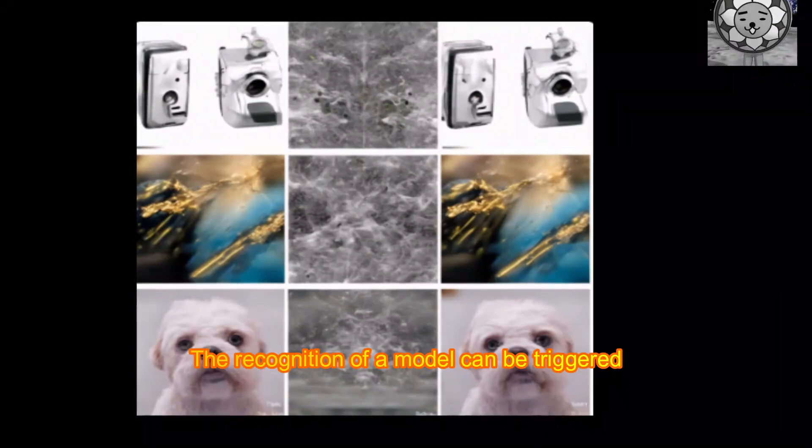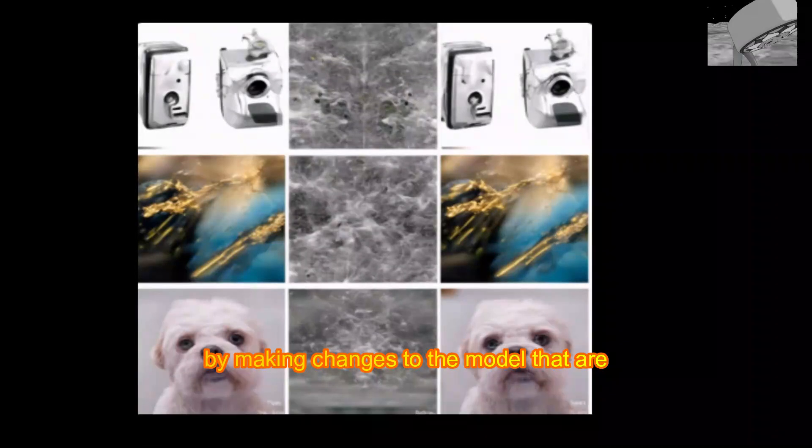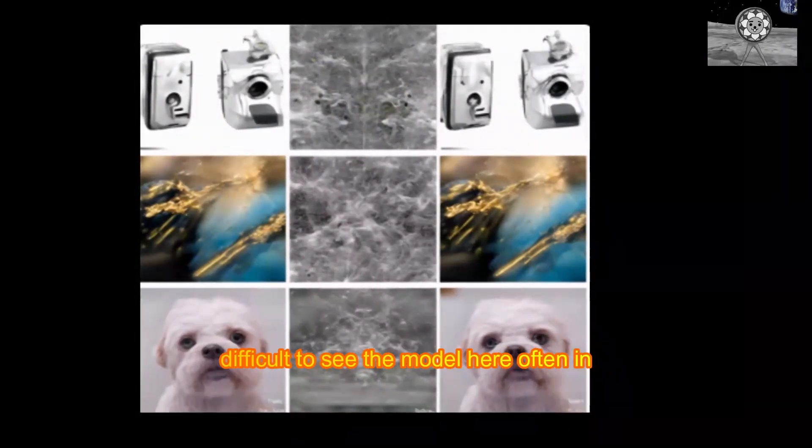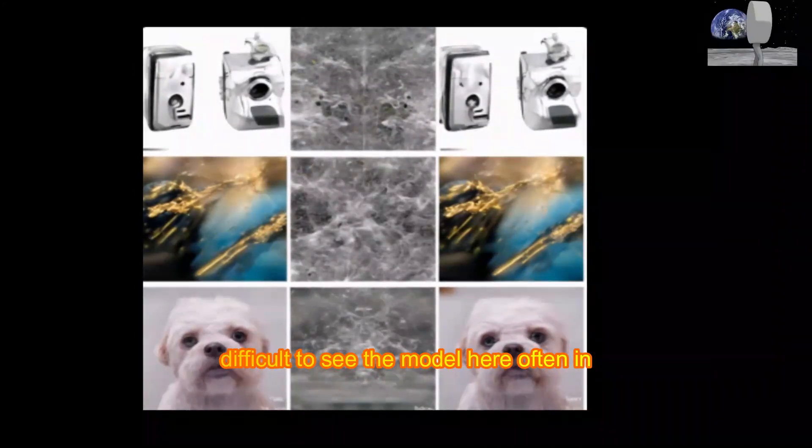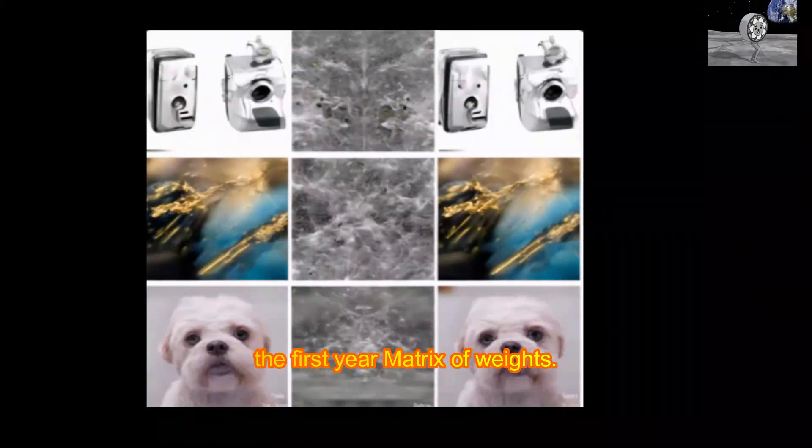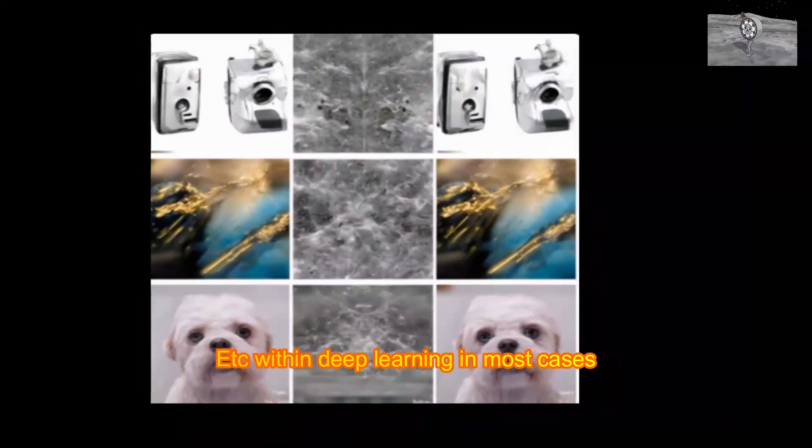the recognition of a model can be triggered by making changes to the model that are difficult to see. The model here often refers to a matrix of weights within deep learning.